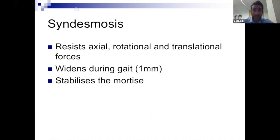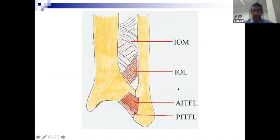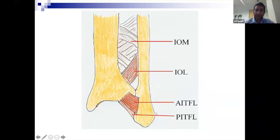The syndesmosis resists axial, rotational, and translational forces. It widens slightly during gait and externally rotates during gait. It's a mobile joint, but having the syndesmosis reduced stabilizes the mortise. There are three main components: the intraosseous ligament in the middle, the AITFL at the front, and the PITFL at the back. All of these components make up the stability of the syndesmosis, so without them you may need to think about fixing it.